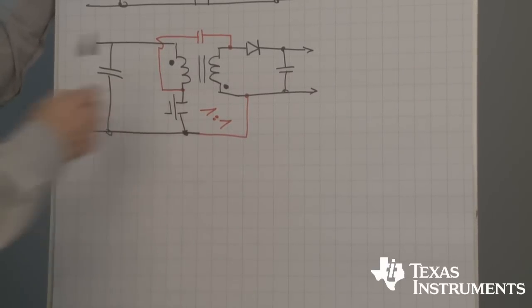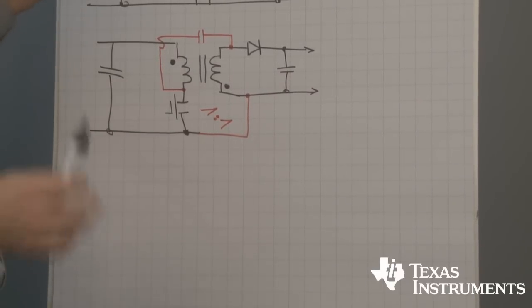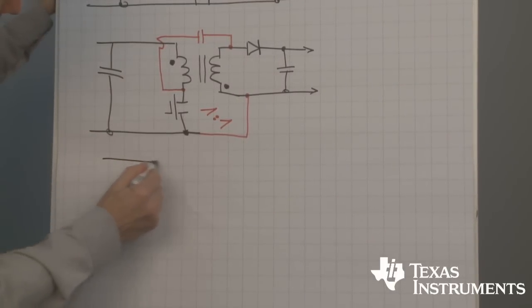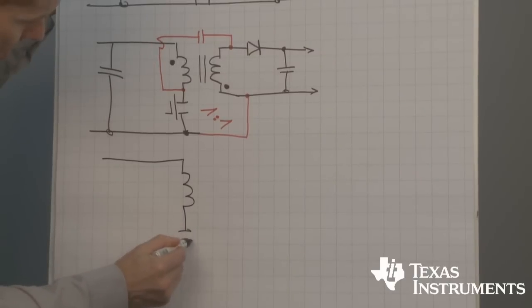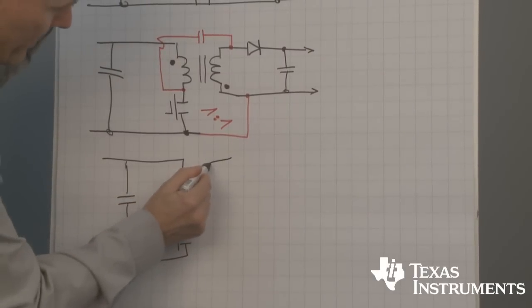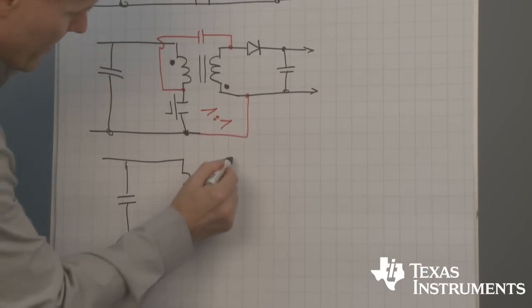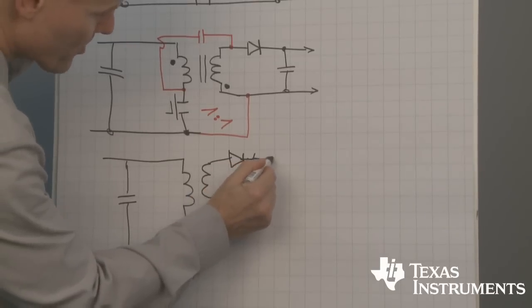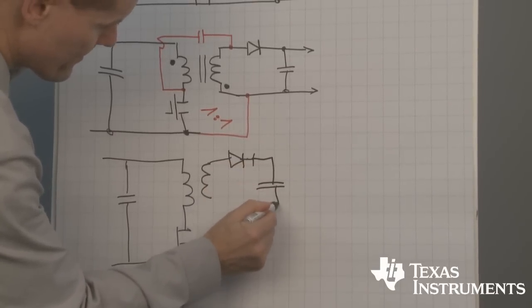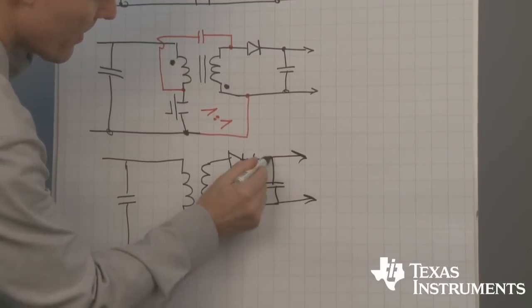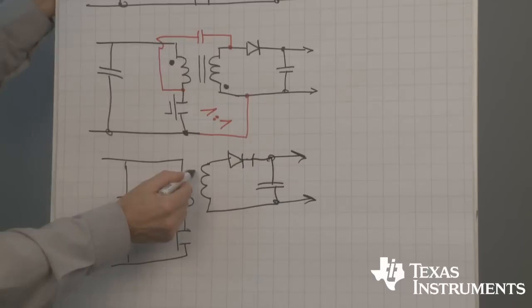But as we have benefits for the SEPIC, of course, we have benefits for the flyback. Let's do the same circuitry again. Primary winding, primary FET, and of course input capacitor. Secondary winding, rectifier of course, and output capacitor.